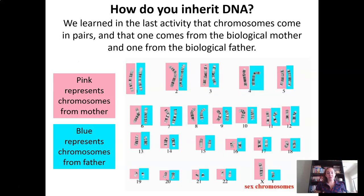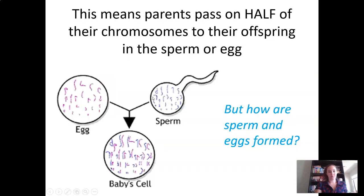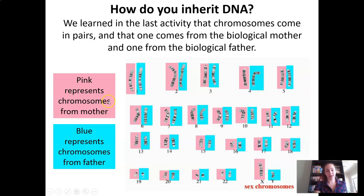So you have seen this slide before. In the last activity, you learned that chromosomes come in pairs — for each chromosome we have, we have two of them. One comes from the biological mother, and one comes from the biological father. This means that when the parents pass on only half of their chromosomes to their offspring in their sperm or their egg cells. Say this is the set of chromosomes for one individual — this individual, when they reproduce, will only pass on half of these chromosomes in their gametes.